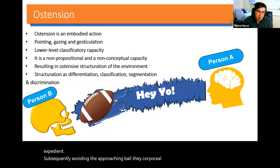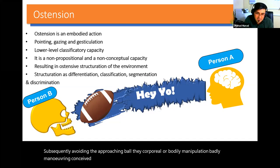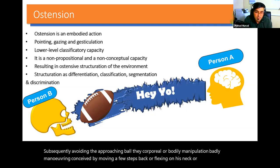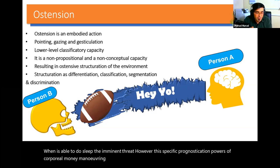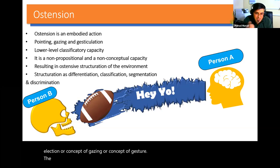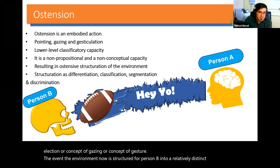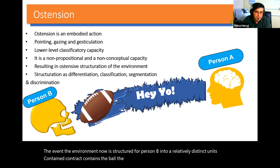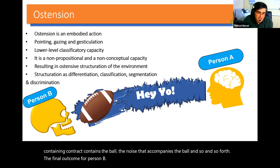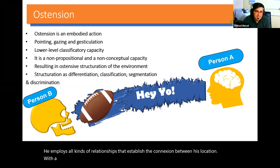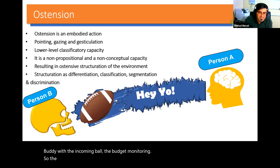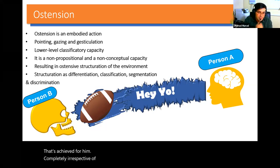What person B does is to optimally prognosticate the spatial trajectory with expedient bodily maneuvering and subsequently avoid the approaching ball. The corporeal or bodily manipulation is achieved by moving a few steps back, flexing one's neck, jumping, or catching the ball — thereby avoiding the imminent threat. However, this specific prognostication and corporeal maneuvering contains no concept of dodging, neck flexion, gazing, or gesture. The environment is now structured for person B into relatively distinct units containing the ball, the noise that accompanies the ball, and so on. The final outcome is an enactive structuration achieved completely irrespective of what conceptual or logical concepts person B has.